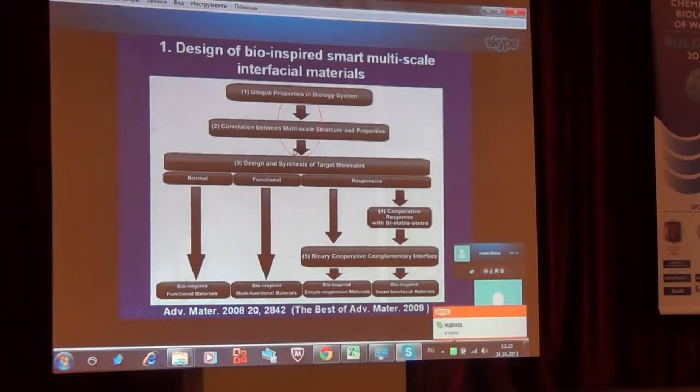Let's start from the first topic, the design of bio-inspired smart multi-scale interfacial materials. In 2008, I gave a review in Advanced Materials and presented a roadmap how to design this kind of material. The first step is to find the unique property in biological systems. Then you try to find the correlation between the multi-scale structure and this unique property. After you understand the principle, then you can design the sensitive carbon molecule for the materials, and finally develop bio-inspired smart functional materials.